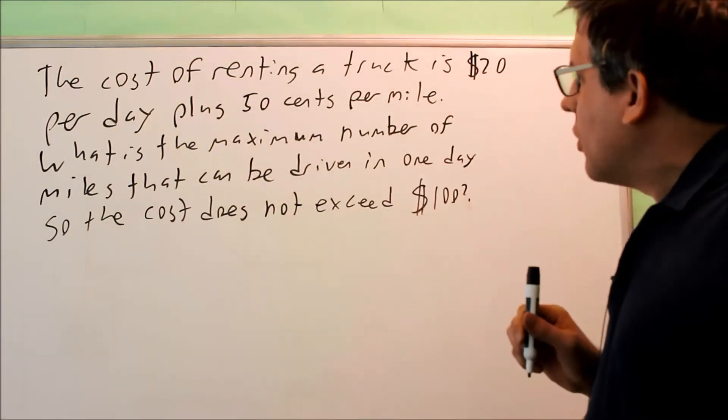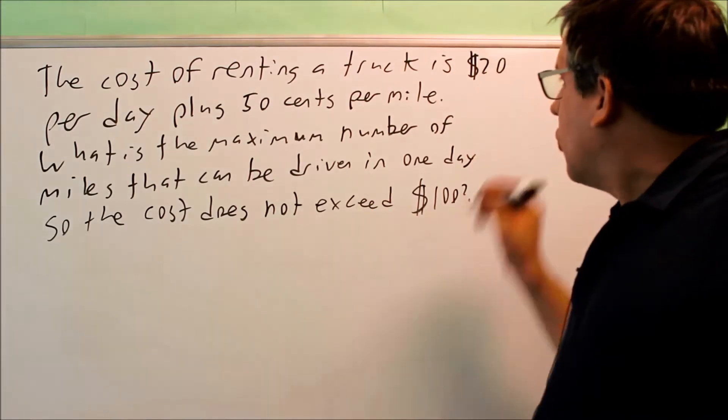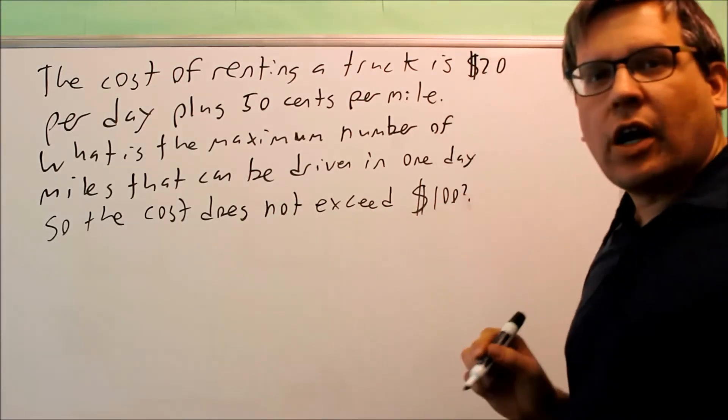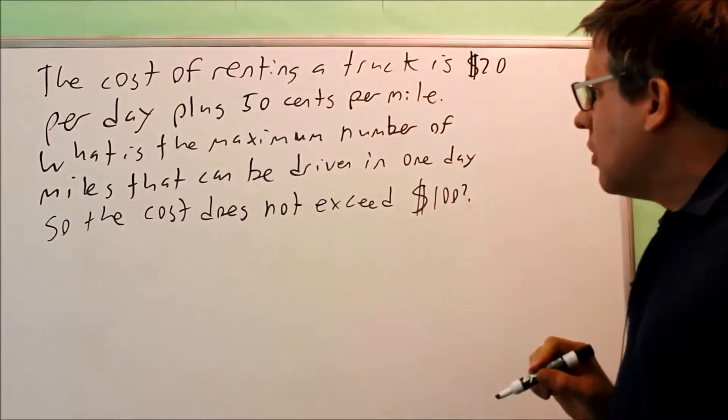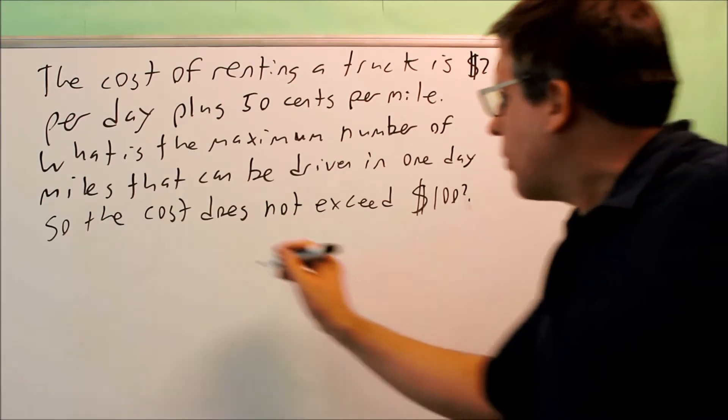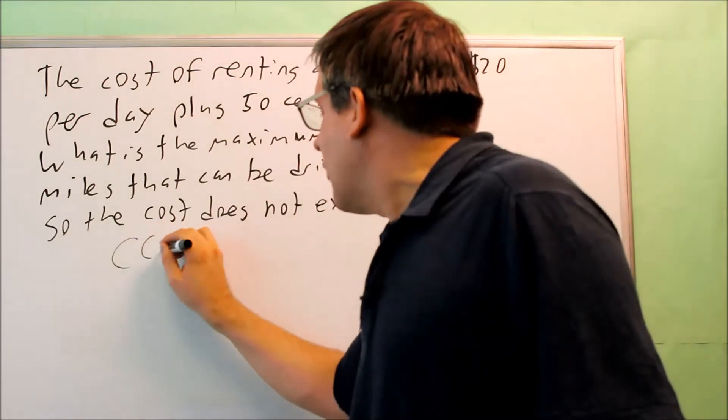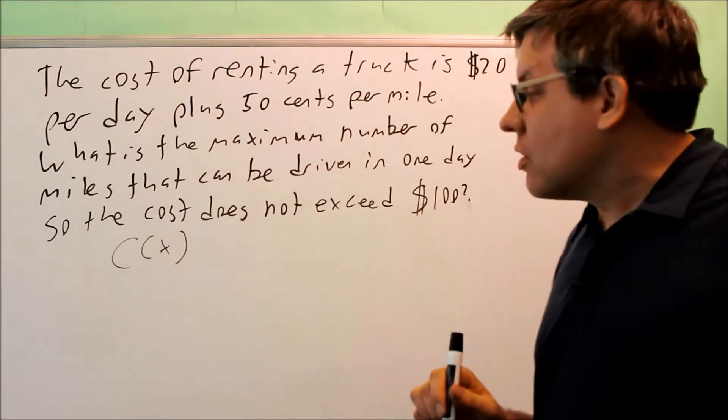Okay, to solve this one, we first need to come up with a cost equation. We have a fixed cost of $20 and a variable cost of 50 cents per mile. So I'm going to let X equal miles, and I'm going to come up with a cost equation. So I have C of X, or just C you could use. I'm using function notation here.